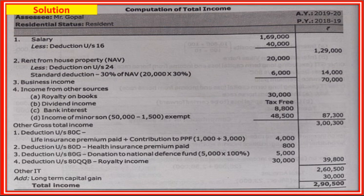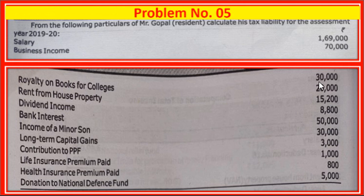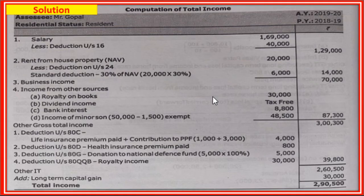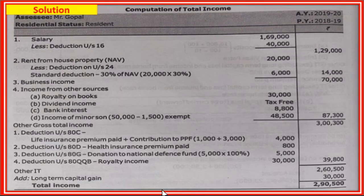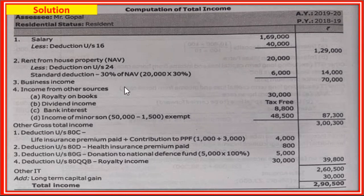Next, income from capital gain: 30,000. Then income from other sources: royalty on books 30,000. Dividend income from Indian company - exempted under section 10(34). Bank interest: 8,800, fully taxable. Income of a minor son - this is clubbing of income provision, so it is added to assessee's income. Total income from other sources: 87,300. Other gross total income: 3,31,100.